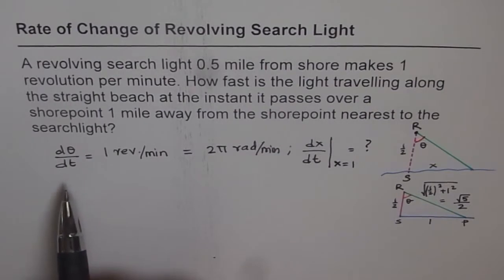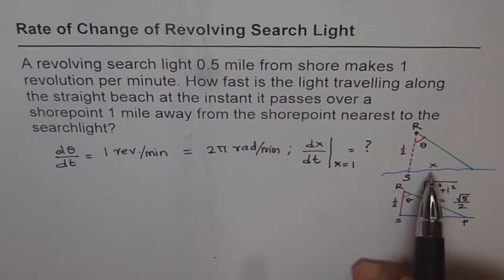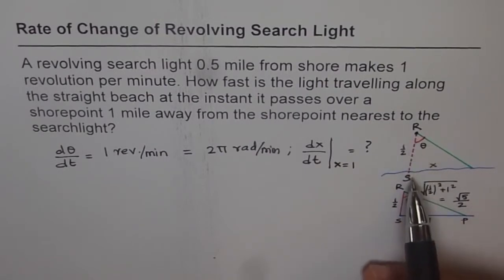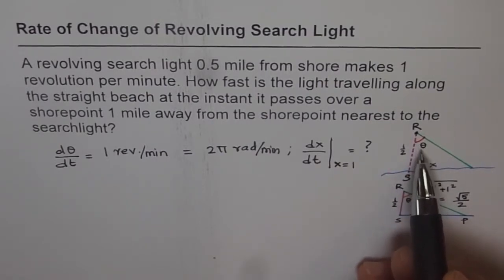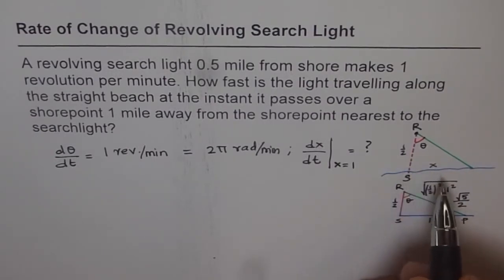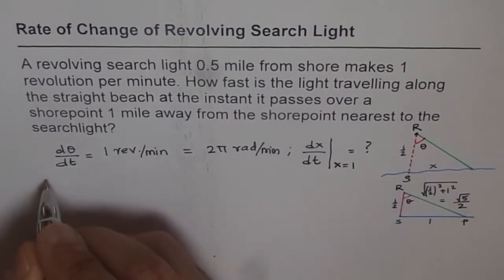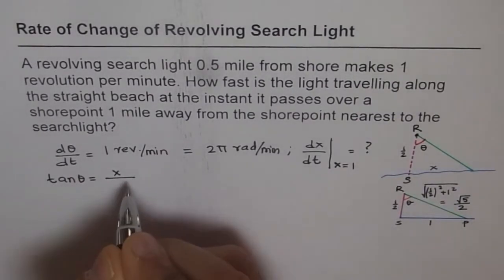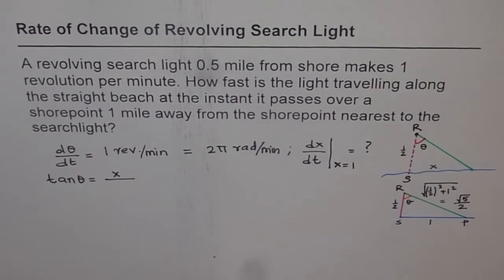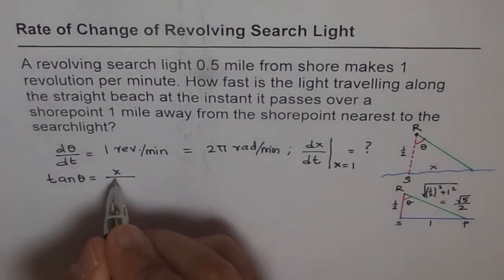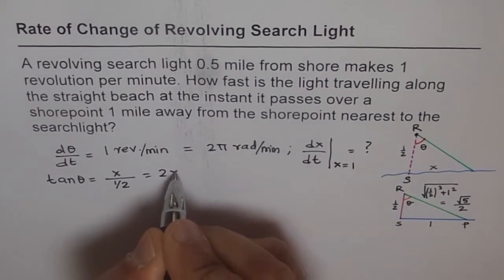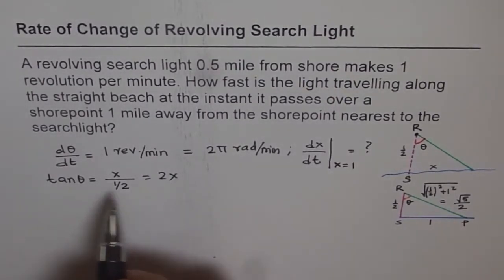To find this, it is best to find a relation between x and theta. Analyzing the diagram, tan theta equals x divided by one-half, which simplifies to 2x. So we have the relation: tan θ = 2x, which connects the two variables.